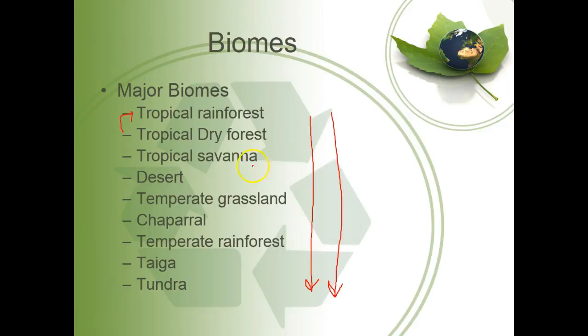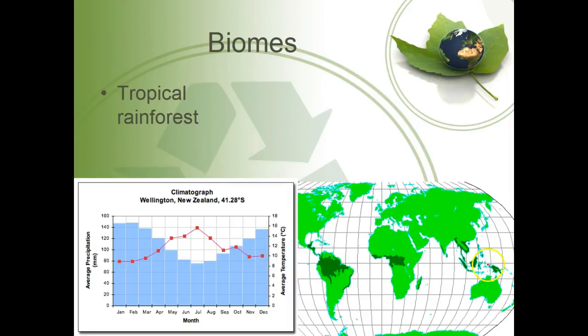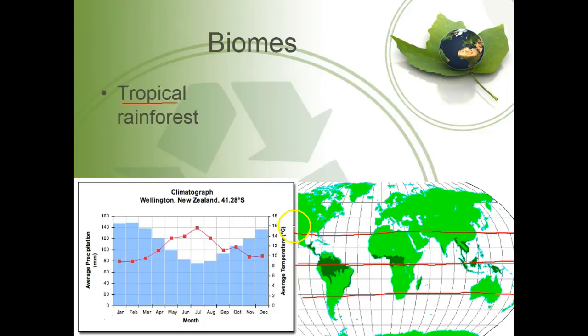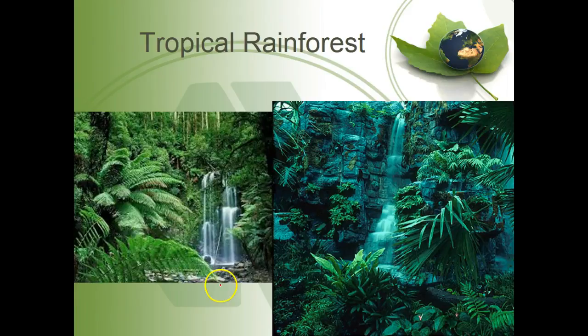Tropical rainforests, shown in the dark green areas, are always right along the equator. To be a tropical rainforest, you have to be within the tropics — from 23.5 degrees north to 23.5 degrees south. All tropical rainforests are found within that tropic region. They receive a large amount of rainfall all year long and remain really hot all year long. This is a double-axis graph called a climatograph — on one axis we have temperature in Celsius, on the other, average precipitation in millimeters, and then the months. It shows the annual rainfall and annual temperature over time.